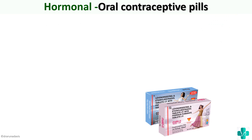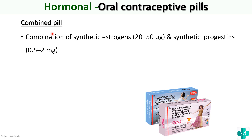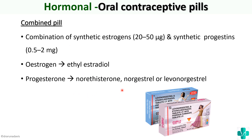The combined pill, as the name suggests, is a combination of synthetic estrogens and synthetic progestins. Synthetic estrogens means ethyl estradiol, and synthetic progestins means norethystron, norgestrel, or levonorgestrel. Here is a picture showing Mala N, which was promoted by the government of India. You can see written on it levonorgestrel — that is the progesterone — and ethyl estradiol — that is the synthetic estrogen.